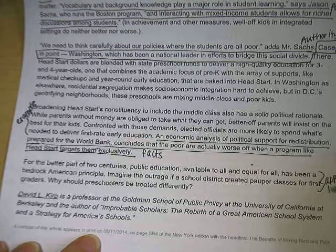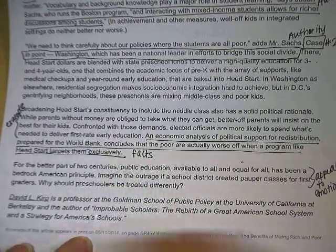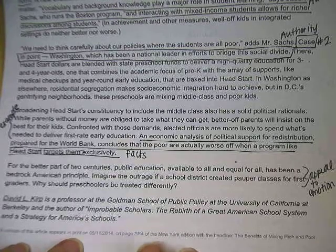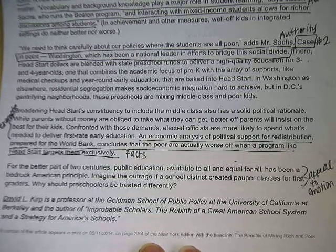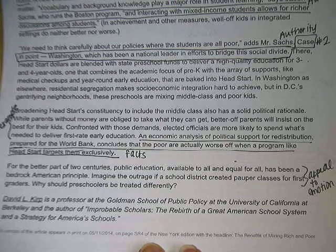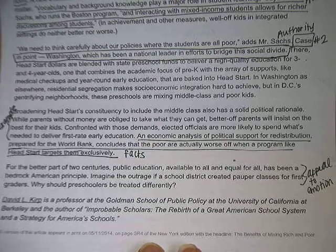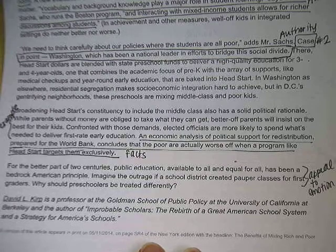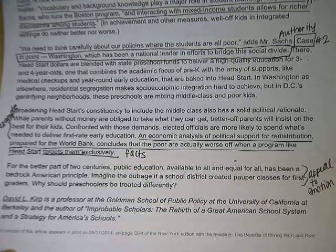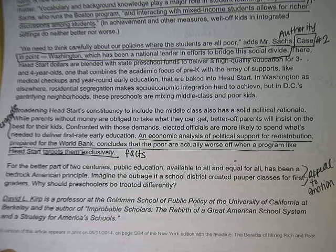'For the better part of two centuries, public education available to all and equal for all has been a bedrock American principle. Imagine the outrage if a school district created pauper classes for first-graders. Why should preschoolers be treated differently?' This is an appeal to emotion, trying to make people feel that the situation is unequal. Now you're going to go to the next article and do the exact same thing — identify the claim and then identify the four types of evidence used in that article.